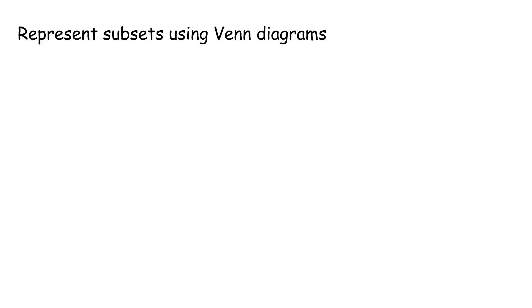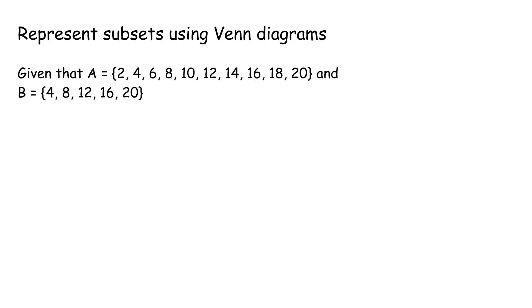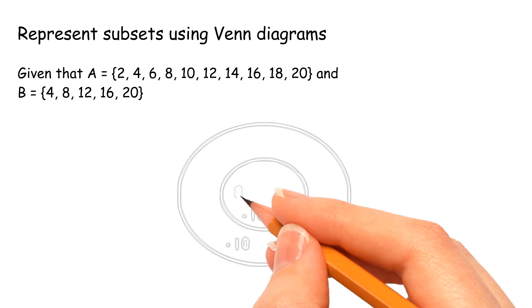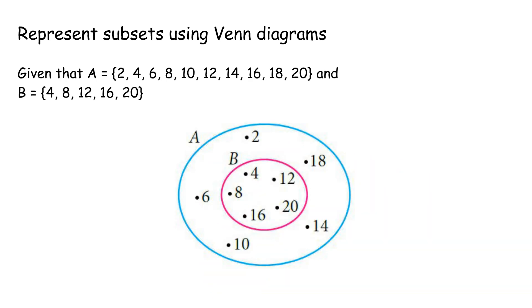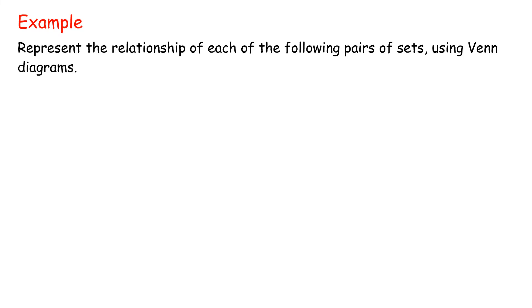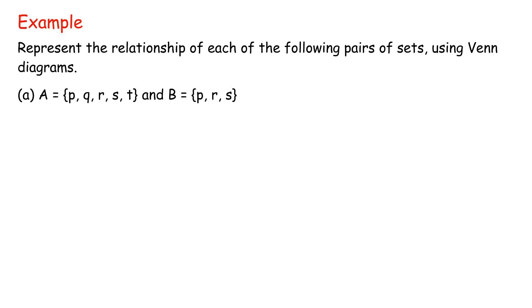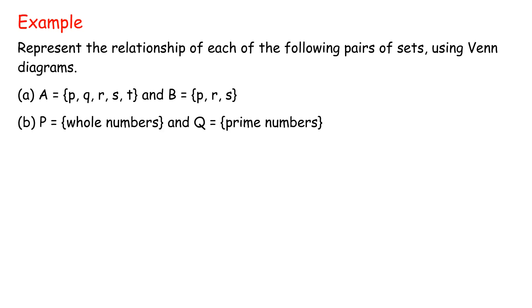Represent subsets using Venn diagrams. Given that A = {2, 4, 6, 8, 10, 12, 14, 16, 18, 20} and B = {4, 8, 12, 16, 20}. Example: represent the relationship of each of the following pairs of sets using Venn diagrams. A: A = {P, Q, R, S, T} and B = {P, R, S}. B: P = {whole numbers} and Q = {prime numbers}.